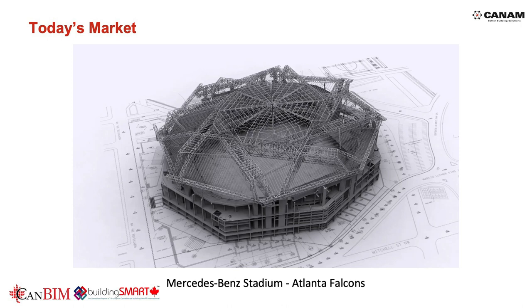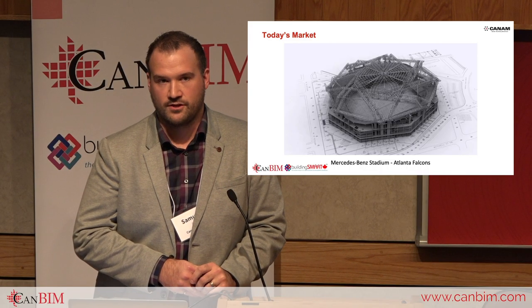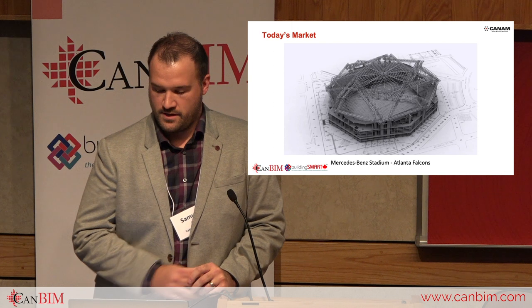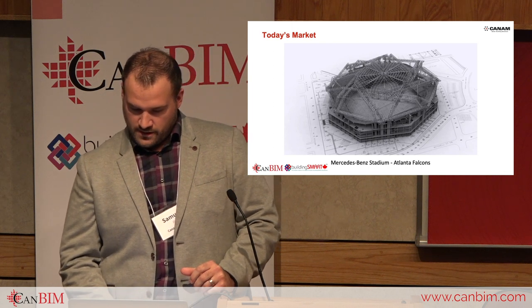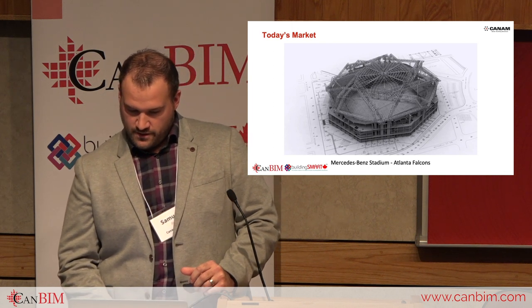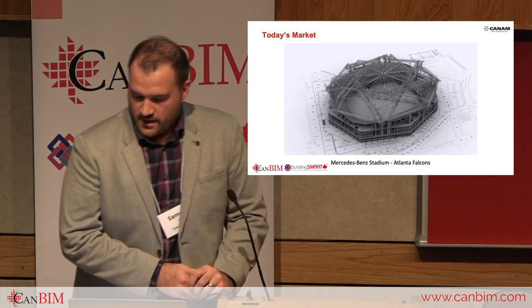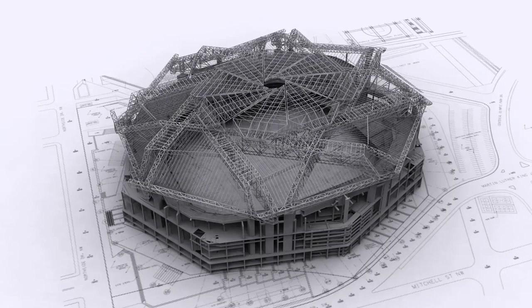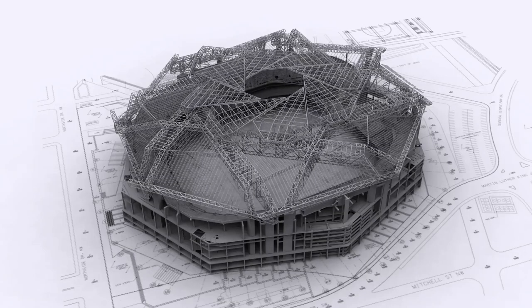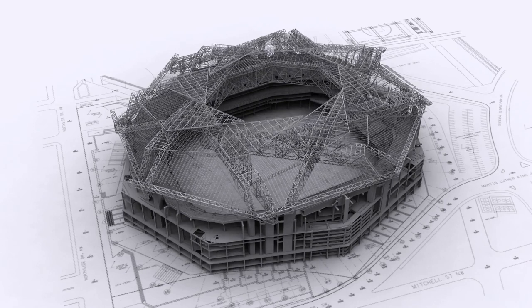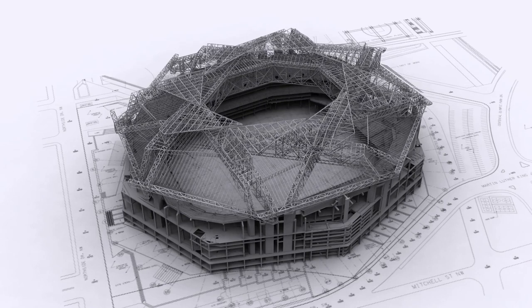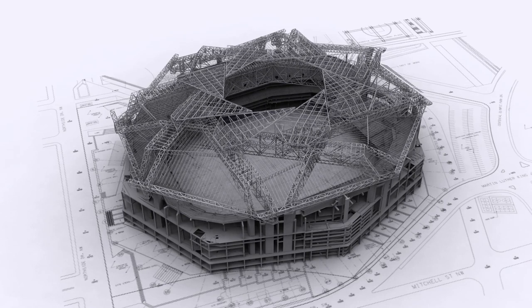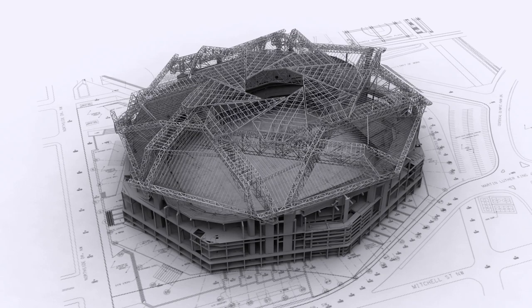Can-Am supplied and erected 29,000 tons of structural steel components. The retractable roof is unique, made of eight interlocking panels, forming more than 200 trusses that span over 735 feet across the length of the stadium.